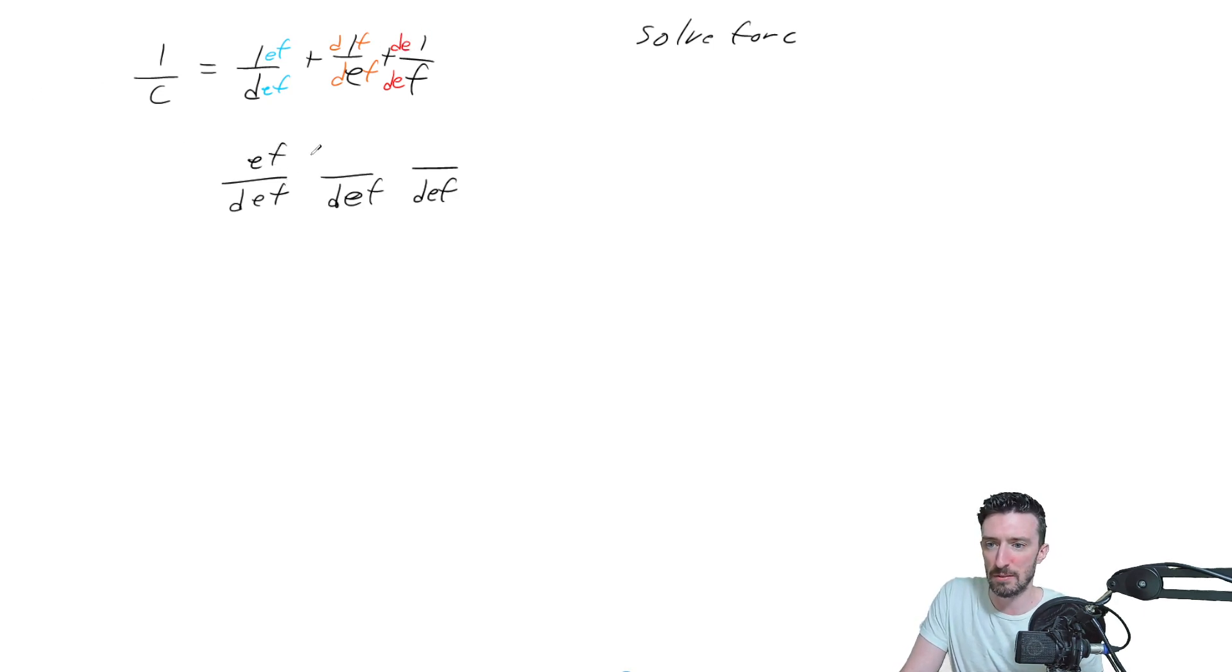So ultimately, you're going to get EF plus DEF plus DE, and instead of putting DEF for each of these, we can erase all of those and just put DEF one time, and all that is still equal to 1 over C.